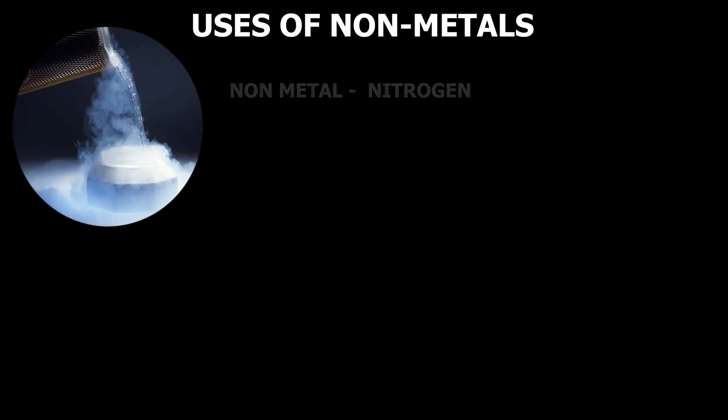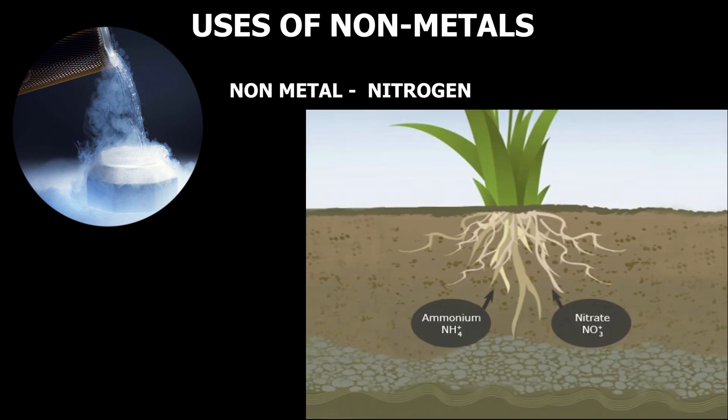Nitrogen is the base material of proteins which are used by living beings for growth. In plants, ammonia is a good source of nitrogen. Ammonia is made from nitrogen non-metal.